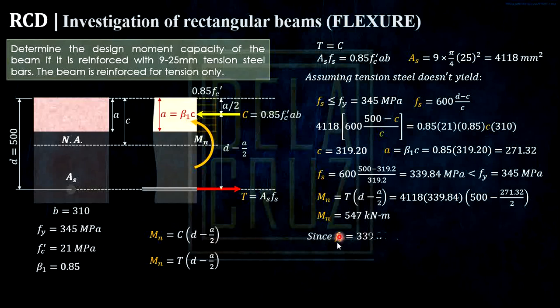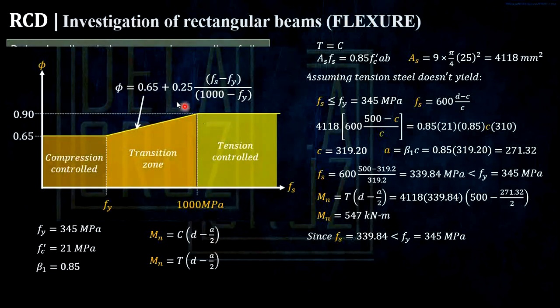Mn is equal to T times D minus A over 2. Substitute, our Mn is 547 megapascal. Since Fs is less than fy, that is 345, according to this code, your Fs here is less than this fy, so somewhere here. Our reduction factor here is fixed at 0.65. The design moment here is 0.65 times 547 and this is the answer. These are the cases where our reduction factor varies. We showed all of them.